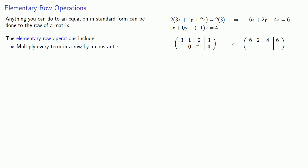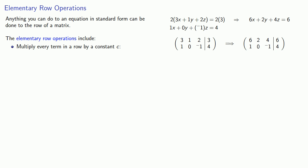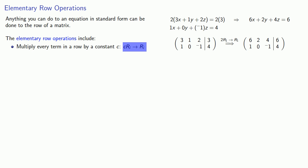Since we only changed the first equation, the second equation and its corresponding row remain unchanged. It is convenient to record our process. In this case, we've multiplied the first row by 2 and replaced it, which we indicate as 2R1 being sent to R1. So one of our elementary row operations is multiplying every term in a row by a constant C, indicated by CRi being sent to Ri.